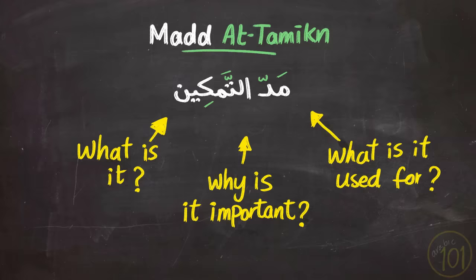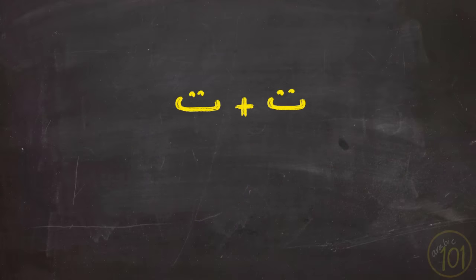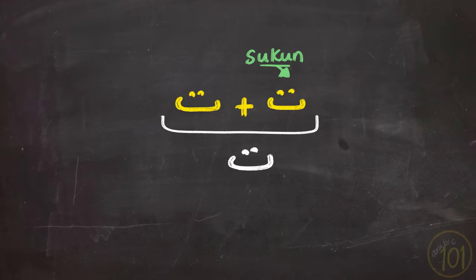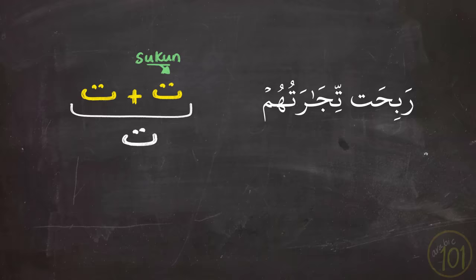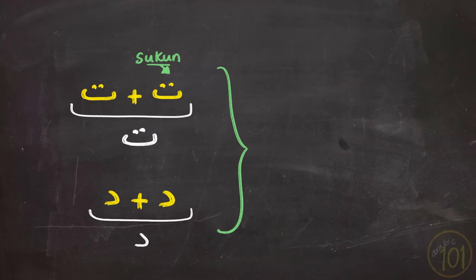Let's first understand the concept of this type of مد and why it exists. Normally, when two identical letters follow one another and the first of which has سكون, we assimilate them or fuse them into one another. So we say تجارتهم with one تا, and وقد دخلوا with one دال. This is always the case when it comes to consonants.